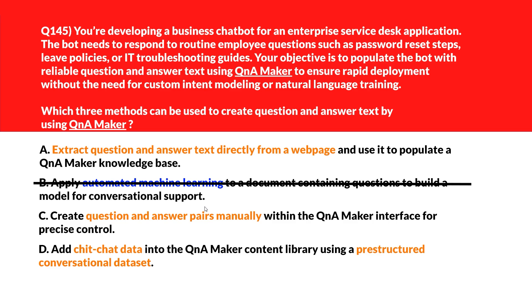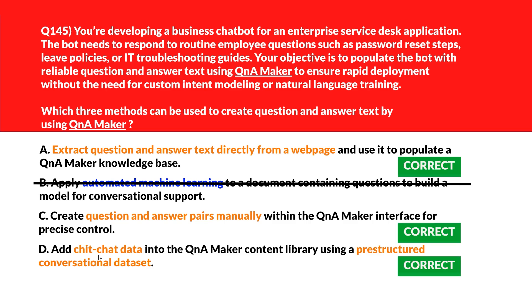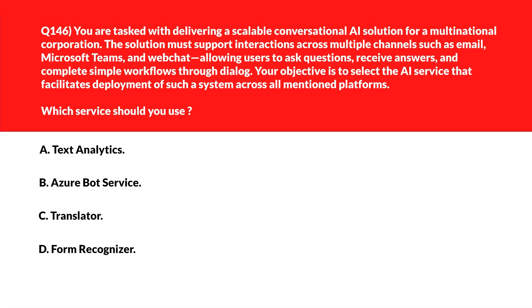Option C: Manual entry allows precise control over QA pairs added to the bot — we'll keep this. Option D: Predefined chit-chat content can be imported to enrich bot responses with casual conversational tone. So options A, C, and D are the right answers.